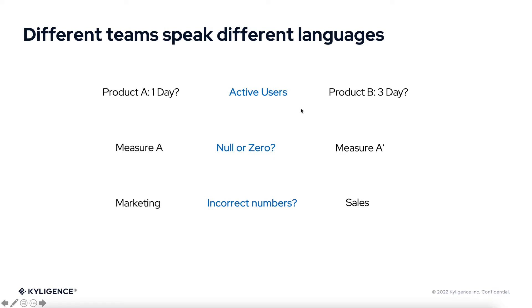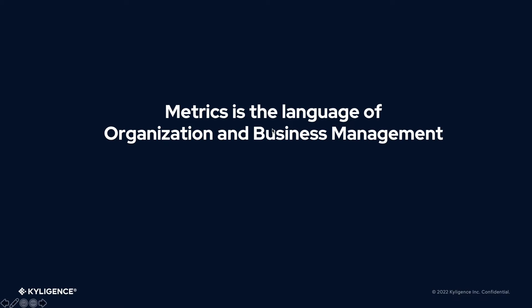The reason for this chaos is that people do not speak the same language when doing data analysis. Everyone thinks they are talking about the same thing, while it's not the case. So how do we solve the problem? We believe everyone in an organization should speak the same language. Metrics should be the language of organization and business management, and they should be created and managed in a central place where people can easily access them — just like a dictionary where all definitions of words are clearly recorded. Whenever people have confusion, they can simply go and look it up.